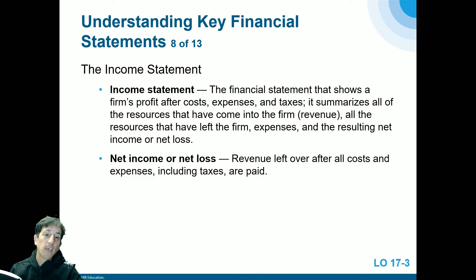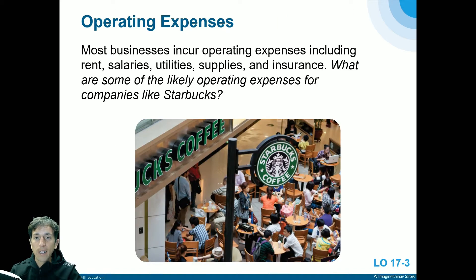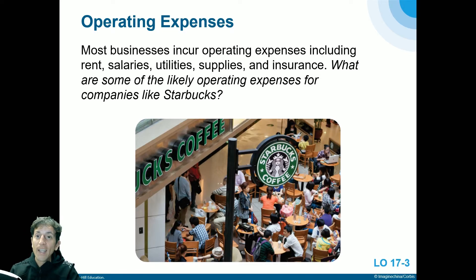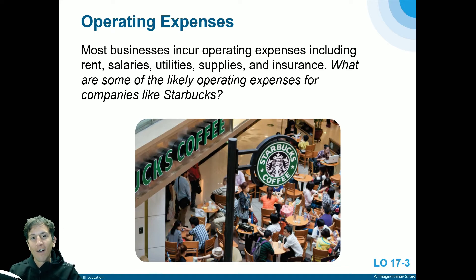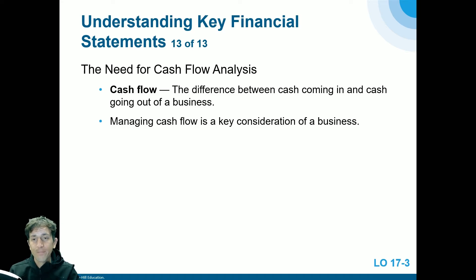The income statement is the financial statement that shows a firm's profit after costs, expenses, and taxes. Most businesses incur operating expenses including rent, salaries, utilities, supplies, and insurance. For a company like Starbucks, operating expenses would include employee wages, supplies like cups and milk, espresso machines, various types of insurance, and rent on each location.